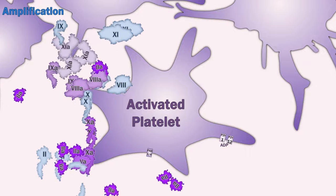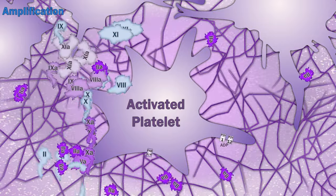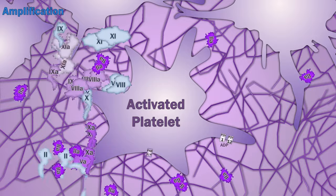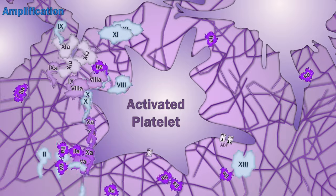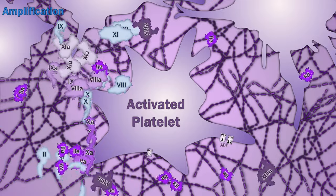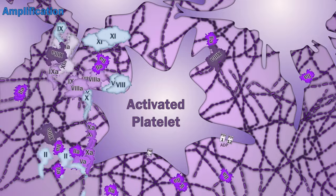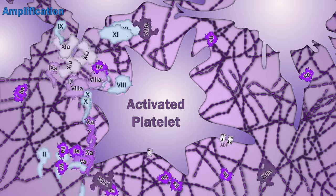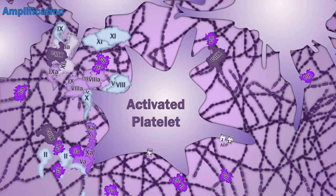Fibrin polymerizes throughout the platelet plug, attaching to alpha 2 beta 3 receptors and binding the structure together. The large quantity of thrombin activates factor 13, which cross-links fibrin with covalent bonds, reinforcing the structure and making it more resistant to fibrinolysis. We now enter the propagation phase as coagulation activates more platelets, which support more coagulation.